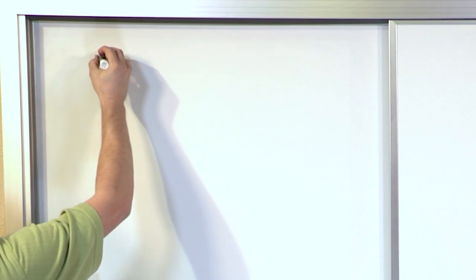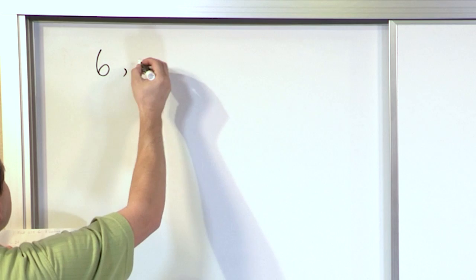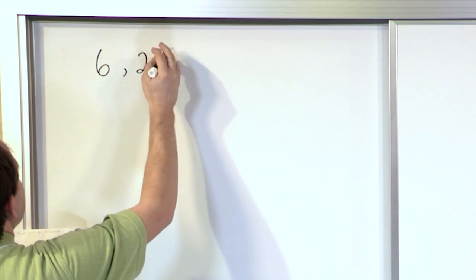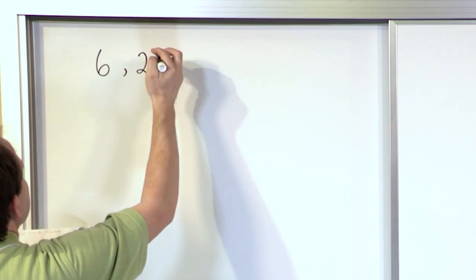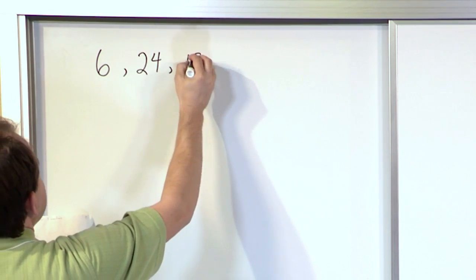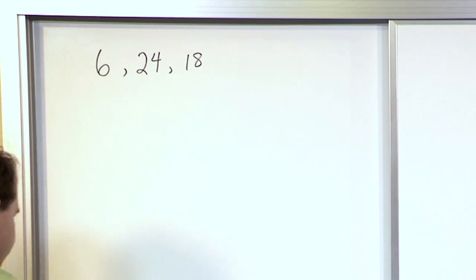So if you wanted to find the greatest common factor between the numbers 6, 24, and 18, then here is how you would do it.